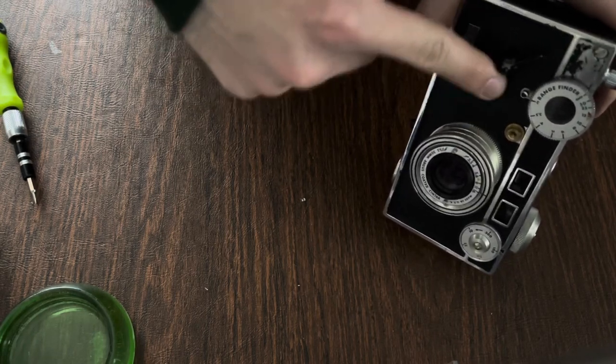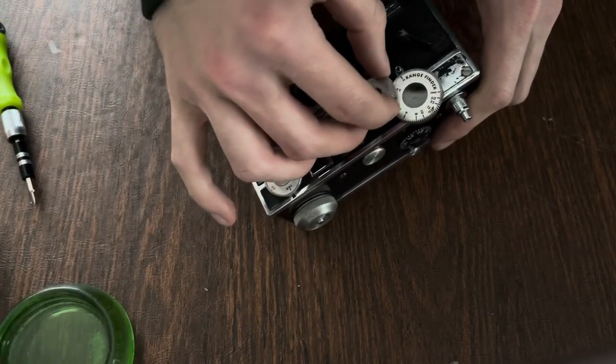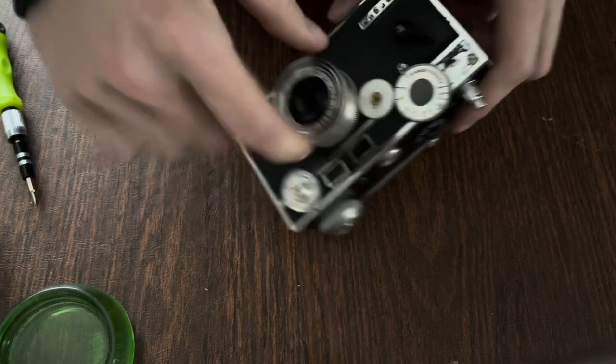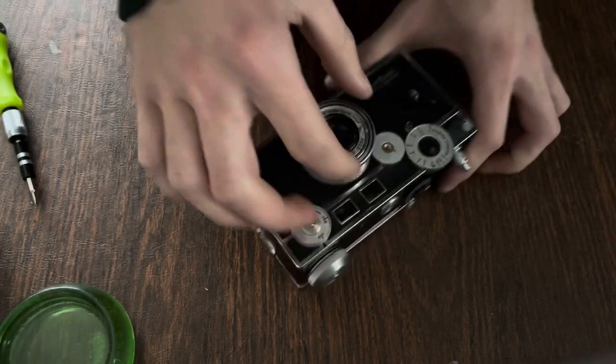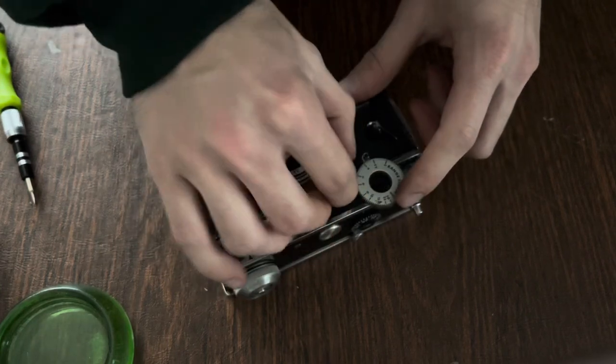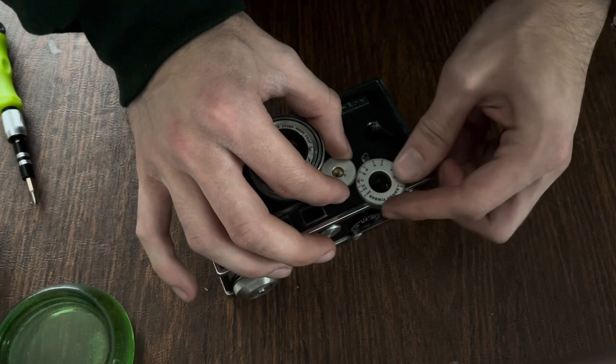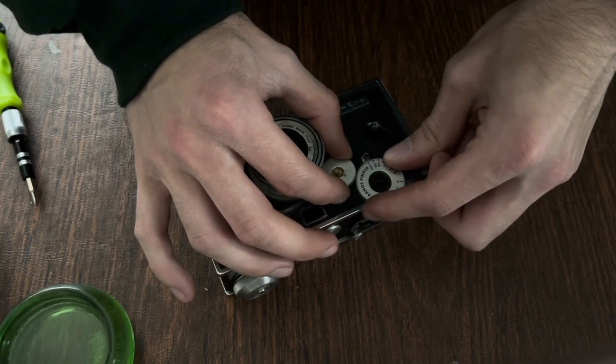Take the idler gear and replace it to its position. Take the lens and rotate it clockwise until it stops. Then take the idler gear and rotate the rangefinder clockwise to infinity.